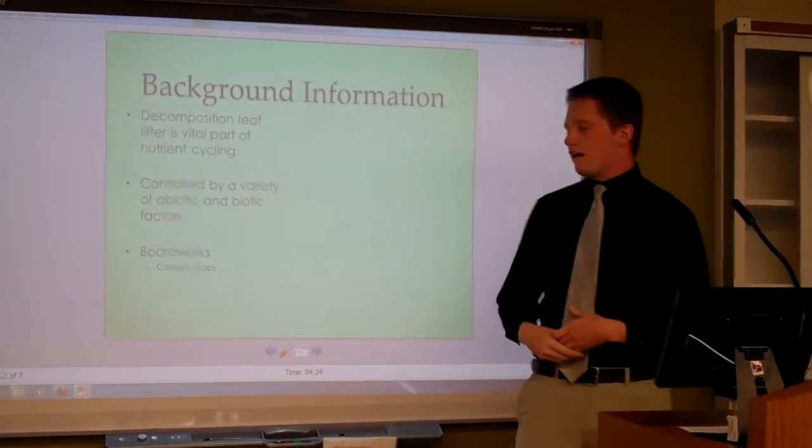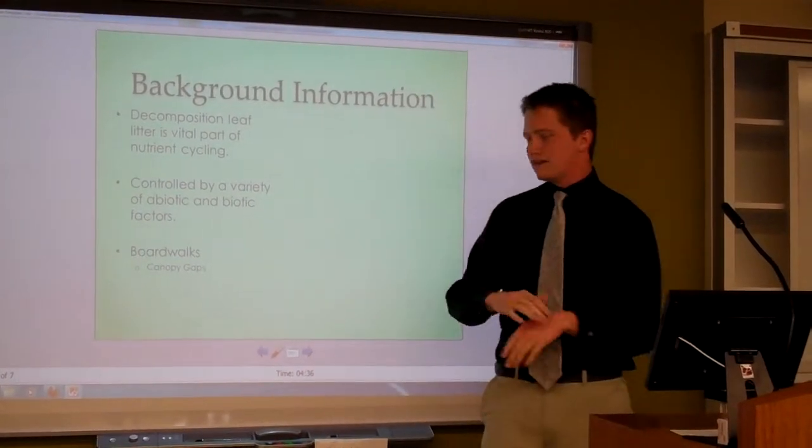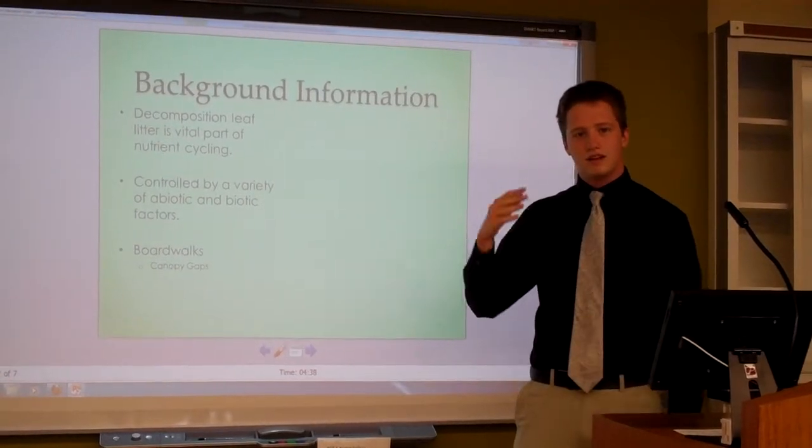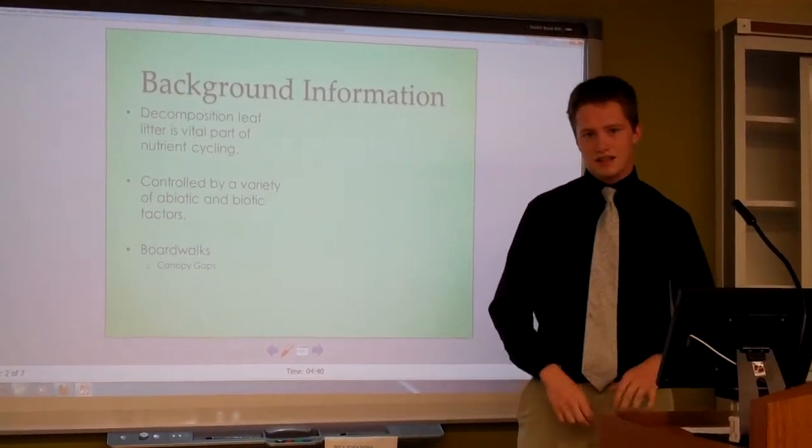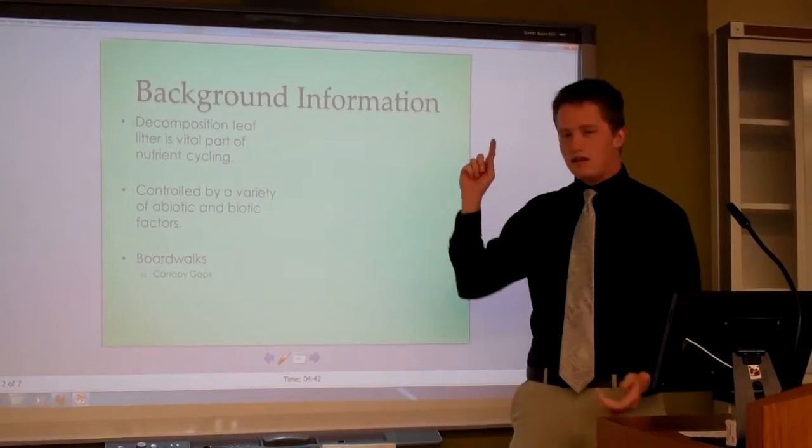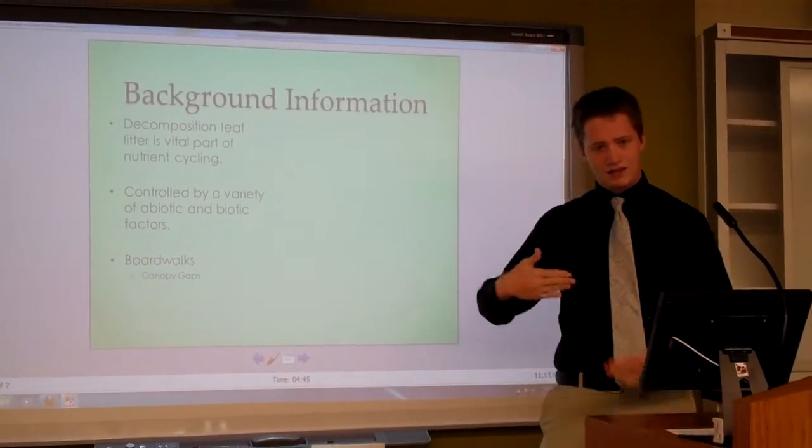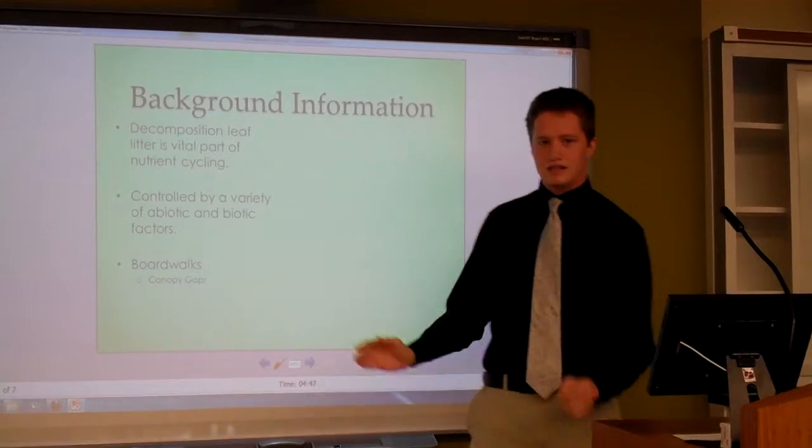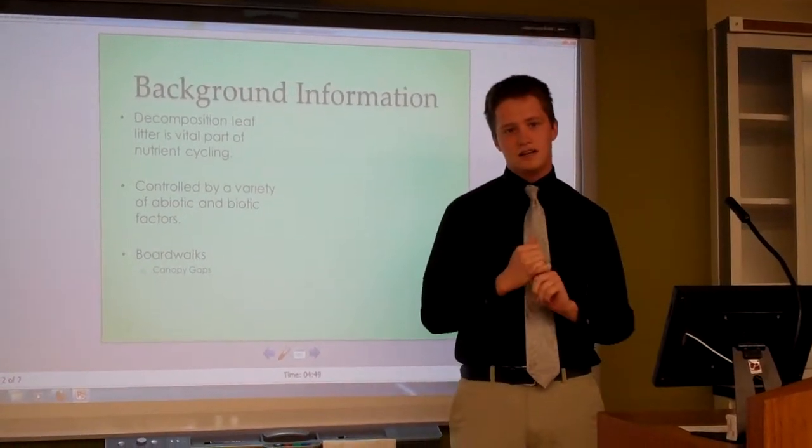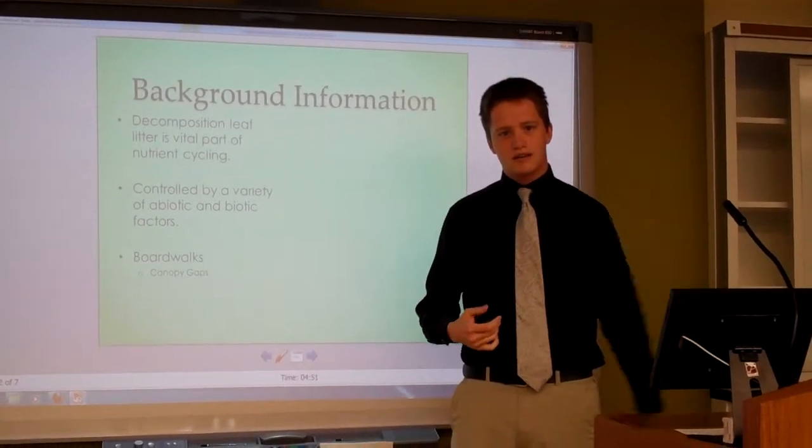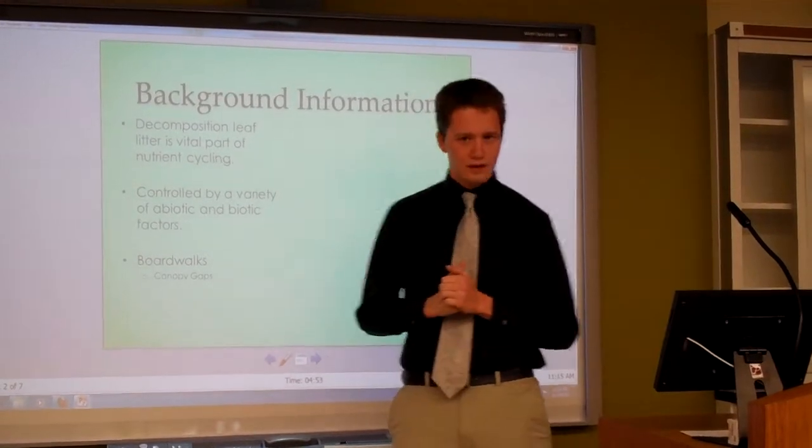Decomposition of leaf litter is a vital part of nutrient cycling. Nutrient cycling is the cycling of carbon, nitrates and phosphates and organic compounds, breaking it down and cycling it back into the mangrove system but also out into estuaries and coral reefs and other coastline ecosystems. The mangroves are a very important part of that.